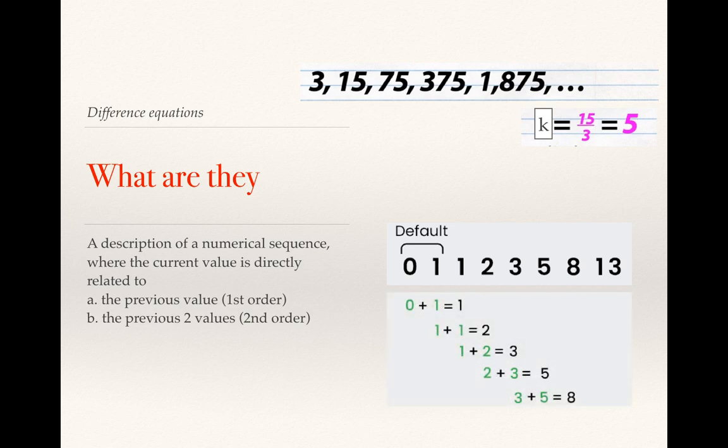In other words, to get the third term, that's the 1, you'd add 0 and 1 together. To get the fourth term you'd have to add the second and the third term together, that's 1 plus 1. And then you just keep going.